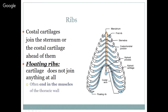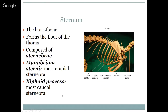Costal cartilages join the sternum. There are two or three floating ribs where the cartilage doesn't join anything at all — they end in the muscles of the thoracic wall. Occasionally those floating ribs will float out a little bit and create a small lump that owners may be concerned about; you want to reassure them that it's okay. The breastbone is the sternum; it forms the floor of the thorax and is composed of sternebrae like vertebrae. There's the manubrium sternum, which is the most cranial, and the xiphoid process, which is the most caudal.